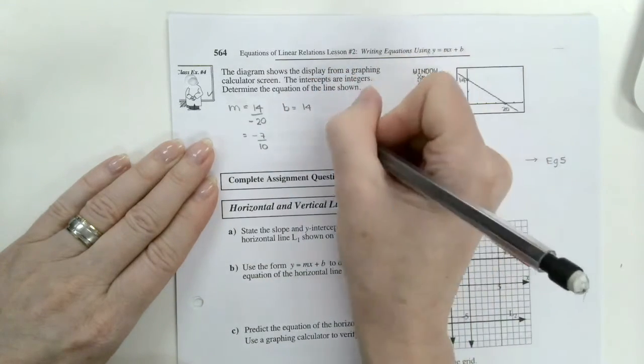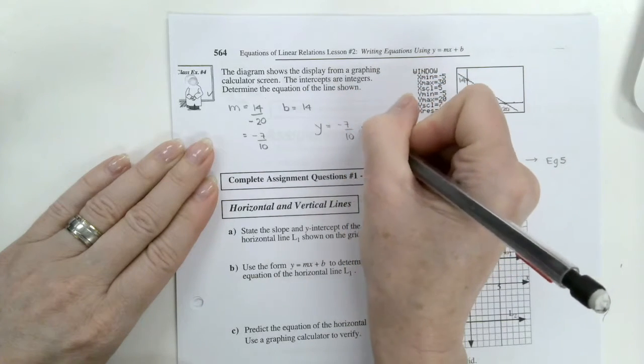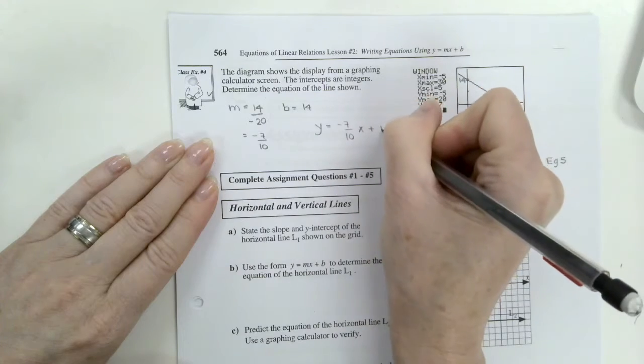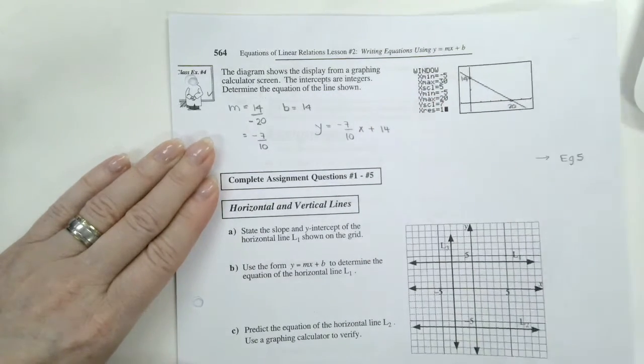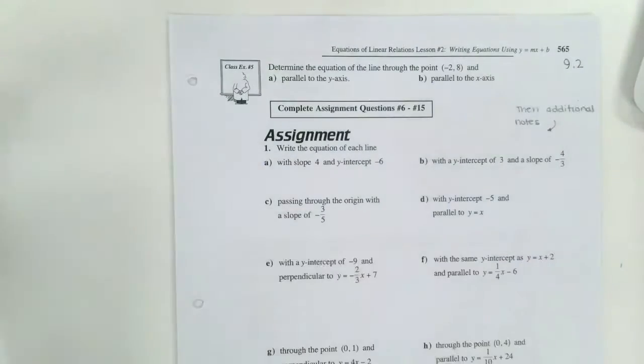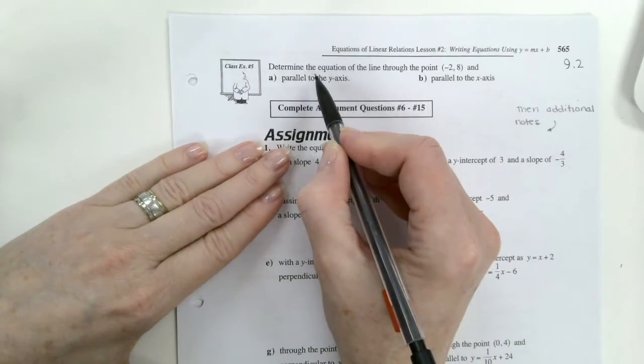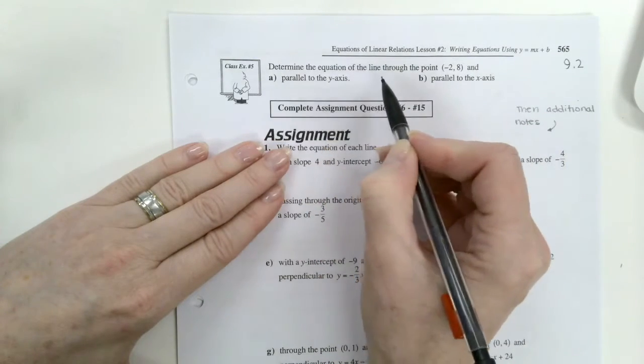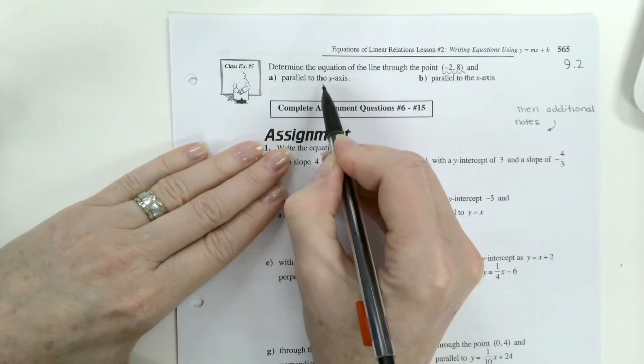And my equation. Y equals negative 7 over 10x plus 14. We're going to go to the next page, to example 5. And then we'll come back. So on this one, determine the equation of a line through this point.